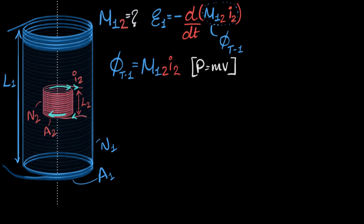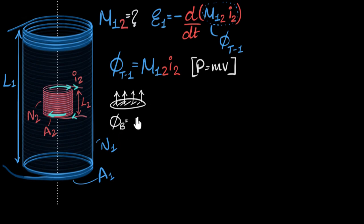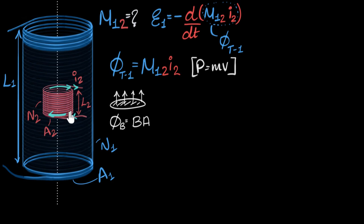Let's go ahead and calculate the flux. If you have a nice flat area with a uniform magnetic field perpendicular to it, the flux is just B times A, multiplied by N for N turns. The big question is: is our magnetic field uniform? Who's generating the magnetic field in this case? It's the tiny coil. We have to calculate the flux through the big solenoid, so let's see what the magnetic field looks like.